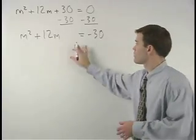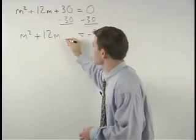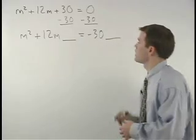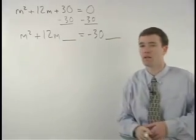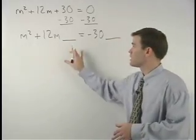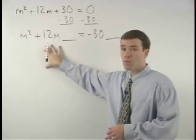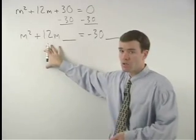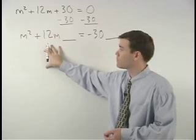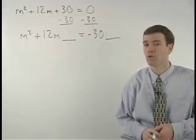Notice that I've left room for a space on each side of the equation. The number that goes in each space is the number that we need to create a perfect square trinomial on the left side of the equation. The question is, what is that number?